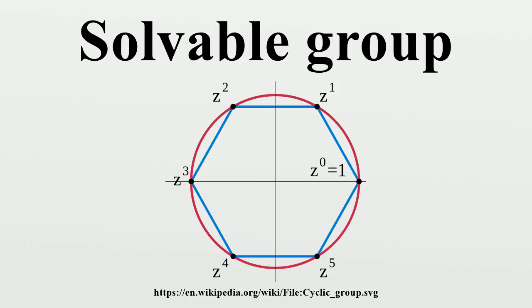If G and H are solvable, the direct product G times H is solvable. Solvability is closed under group extension. If H and G/H are solvable, then so is G. In particular, if N and H are solvable, their semi-direct product is also solvable.